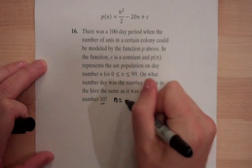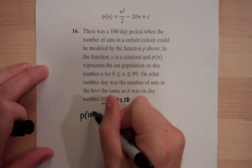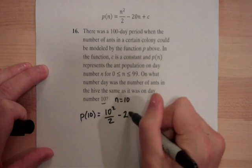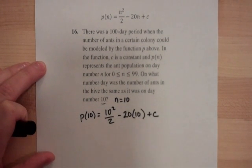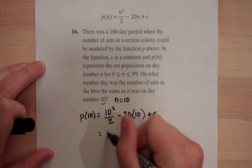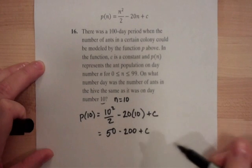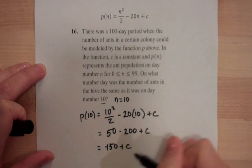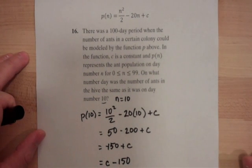Now, what they're doing at the bottom here, they say one number day was the number of ants in the hive the same as it was on day number 10, is they're giving us an input, right? They're telling us put in day number 10, that is n equals 10. So, that's the first thing we're going to do. We're going to set n equal to 10 and see what happens, okay? So, instead of doing p of n, we're going to do p of 10, right? And that's going to be 10 squared over 2 minus 20 times 10 plus c. It kind of stinks that that c is still there, but we're going to write it out for now, okay? And we're going to simplify. 10 squared is 100, divided by 2 is 50. 20 times 10, don't need a calculator for that. See, I'm going to simplify it a little bit further, we get negative 150 plus c. And if you want to make it look a little nicer, you could say c minus 150.